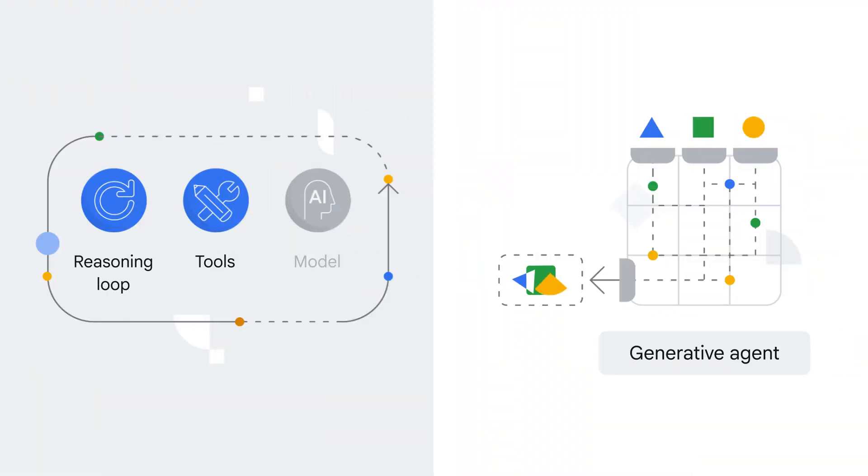Next came generative AI — a whole new world of natural language understanding. Now agents were really brought to the next level. Instead of just recognizing keywords, these agents can actually understand the meaning and intent behind your words. So if you ask a question in a roundabout way, they can still figure out what you're trying to do. This allows for much more natural and flexible conversations. If we go back to the components of the agent, you can now see a reasoning loop, tooling, and the model added in there.